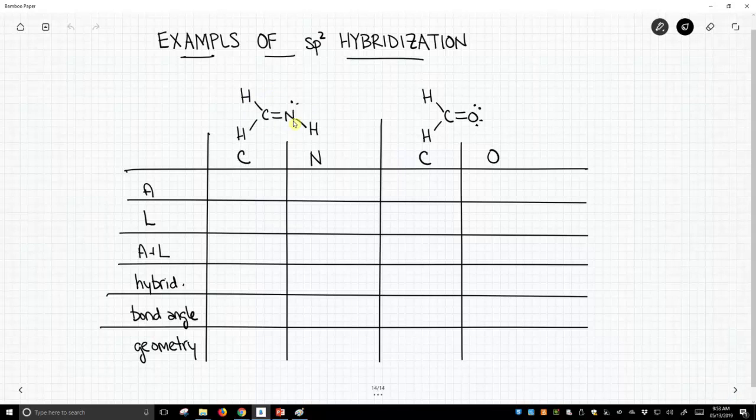This carbon, how many attached atoms does it have? It has three attached atoms. It's attached to two hydrogens and a nitrogen. Now granted it has a double bond to the nitrogen, but it's still one attached atom. The nitrogen in this molecule has two attached atoms. It's attached to a carbon and a hydrogen.